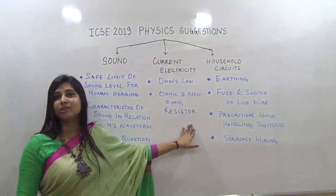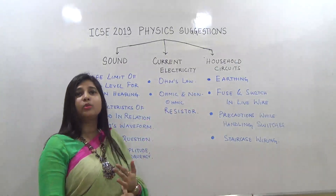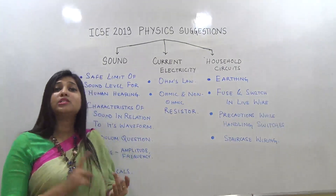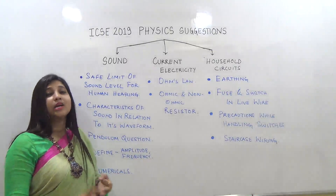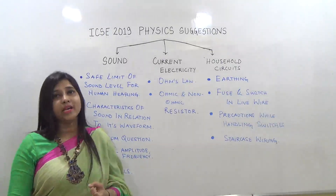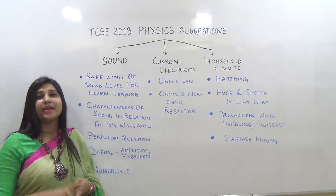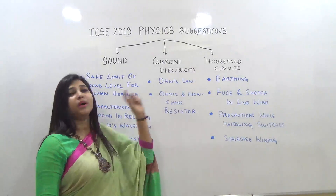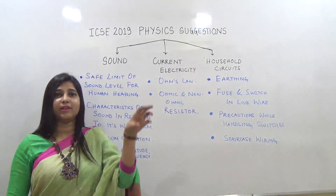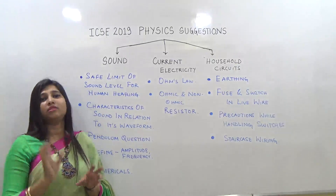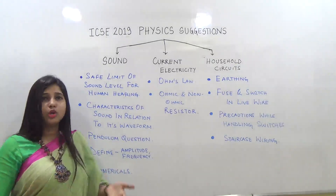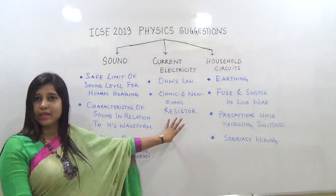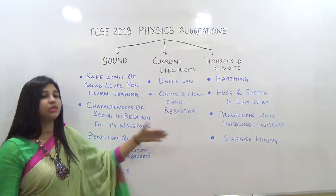Then we have ohmic and non-ohmic resistors. You need to: define ohmic and non-ohmic resistors; state the differences between them; draw the V versus I graph for ohmic and non-ohmic resistors; and explain how to find resistance from the ohmic resistor graph — by calculating the slope of the V-I graph, you get the value of resistance. Numericals are also expected.